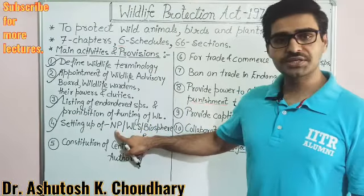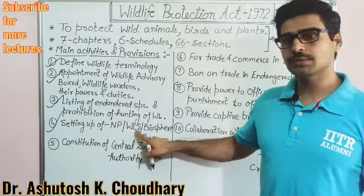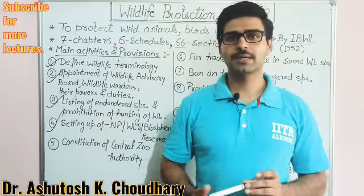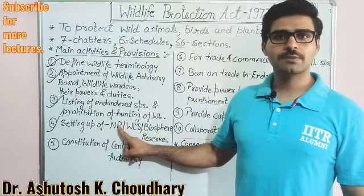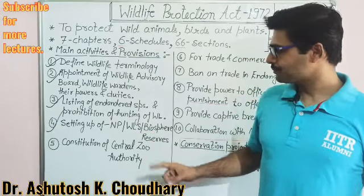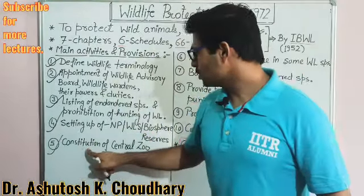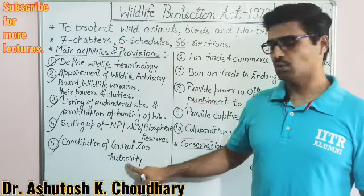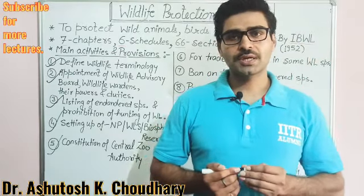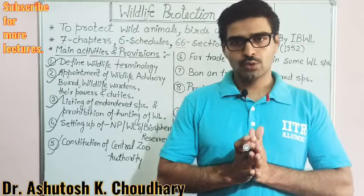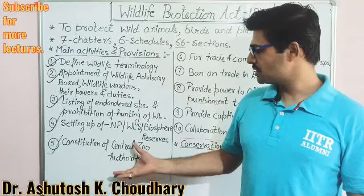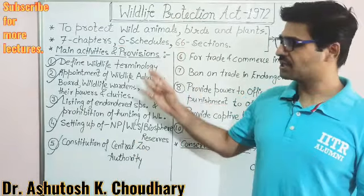National parks, wildlife sanctuaries, and biosphere reserves — what they are — we have already discussed in the fourth unit. The fifth point is the constitution of the Central Zoo Authority. Who can establish a zoo, what are its rules and regulations — all of that is decided by the Central Zoo Authority, and this is also part of the Wildlife Protection Act 1972.